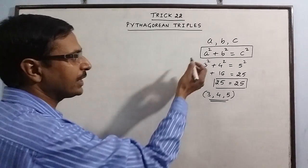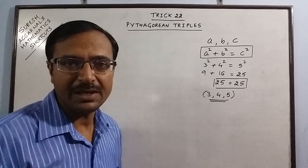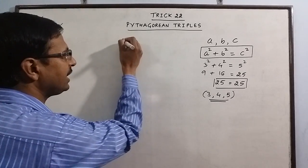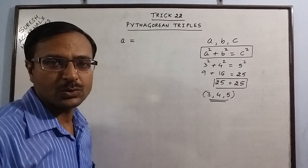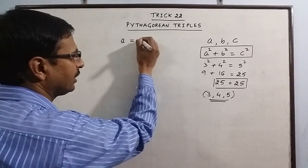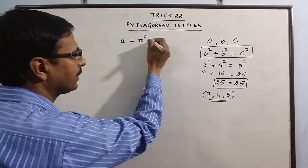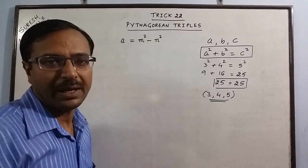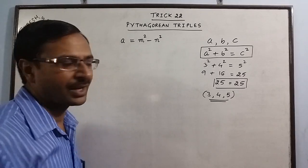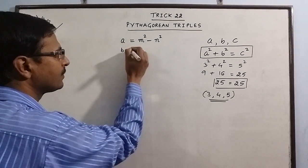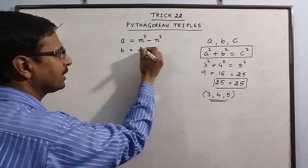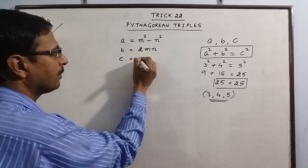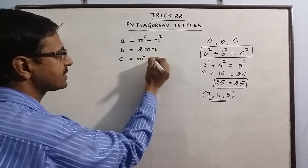The basic rule for this is, if we have to identify these three numbers A, B and C, then we can find A by using the formula M square minus N square. I will tell you what M and N are. B by using 2MN and C by using M square plus N square.